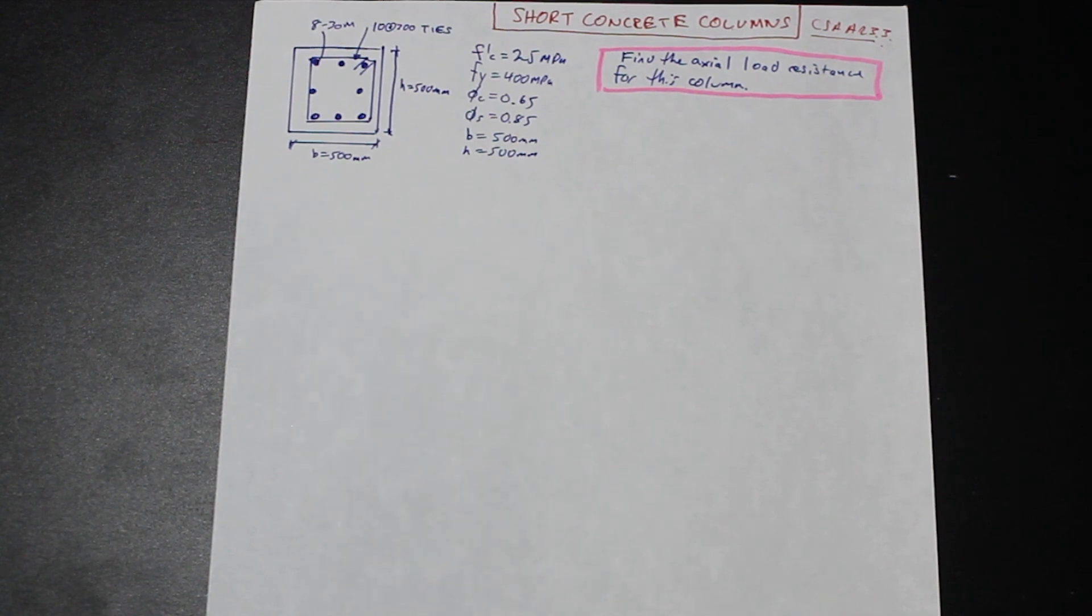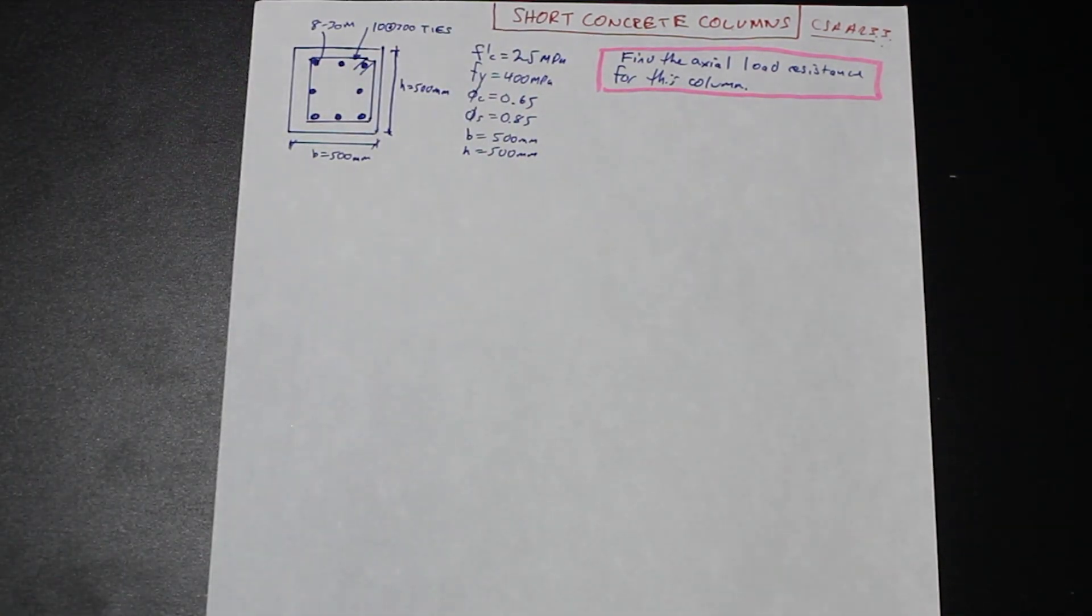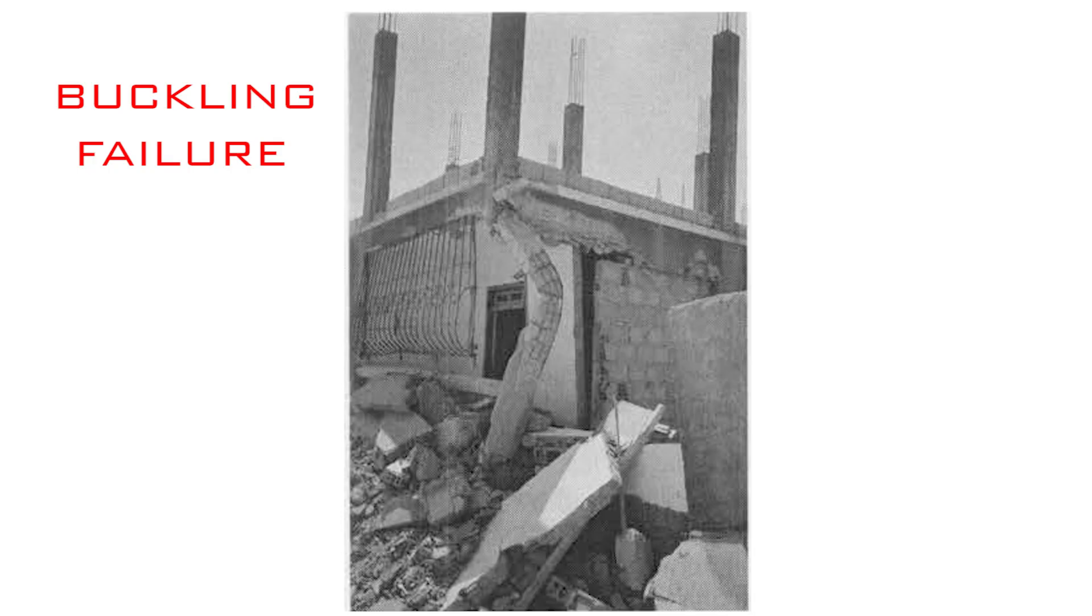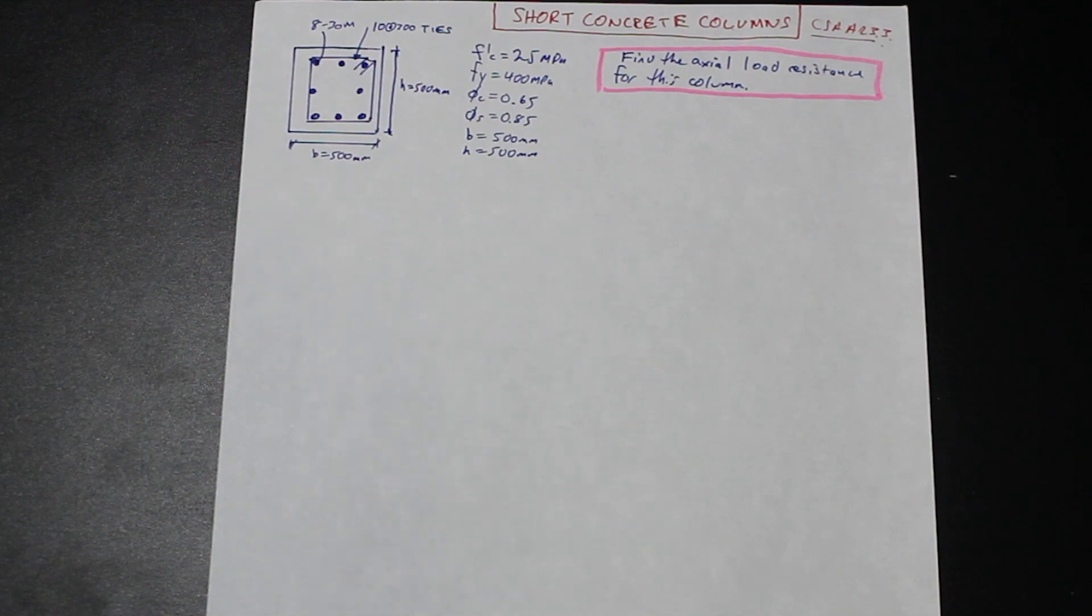A column is considered slender if its least cross-sectional area, so the smallest cross-sectional area, is quite small compared to its length. So you have, let's say, a 250 by 1,000 column. Slender columns have a smaller axial load carrying capacity than short columns because they're susceptible to instability failures. So they're susceptible to buckling, to P-delta second-order effects due to, perhaps, non-concentric loading or accidental eccentricities during construction.